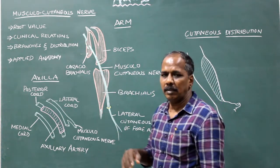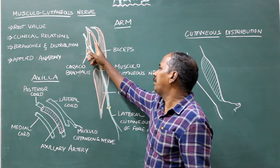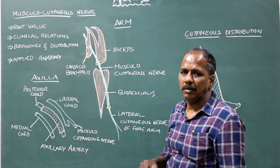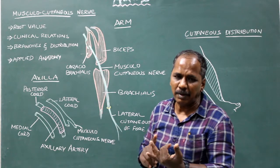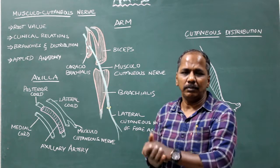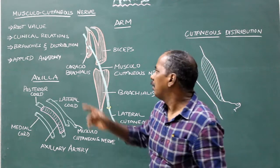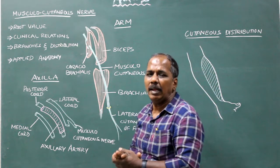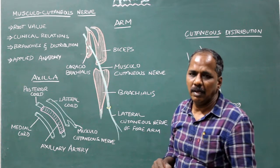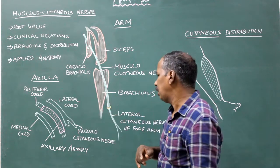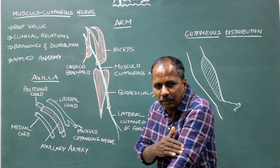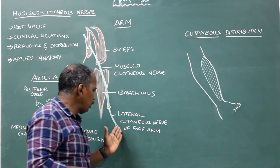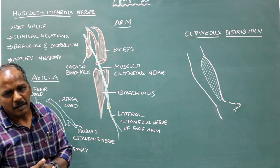In the arm, the front of the arm consists of three muscles: brachialis, biceps, and coracobrachialis. The musculocutaneous nerve enters the arm by piercing the coracobrachialis, then descends between the biceps and brachialis. Near the lower part of the arm, it pierces the deep fascia and continues as the lateral cutaneous nerve of the forearm.